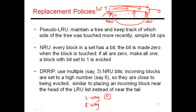For an eight-way cache, implementing LRU is much harder. You need to maintain a linked list — way 3 touched most recently, then way 6, then way 4, way 1, and so on. It takes 24 bits to implement true LRU: three bits per entry in the linked list, with eight elements. Every time a block is touched, you must update this list. True LRU is complex enough that most processors don't do it for highly associative caches.